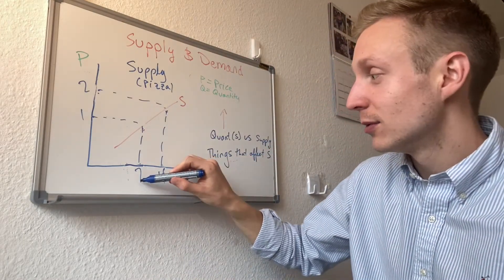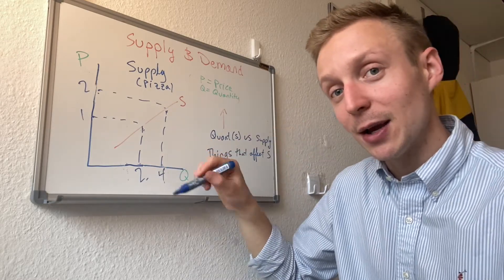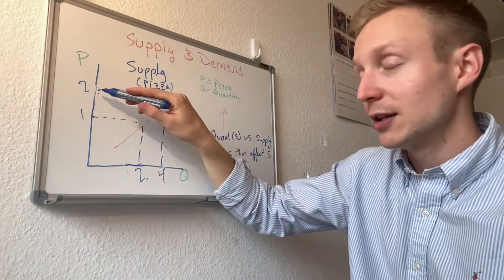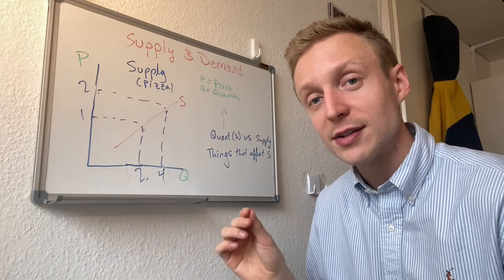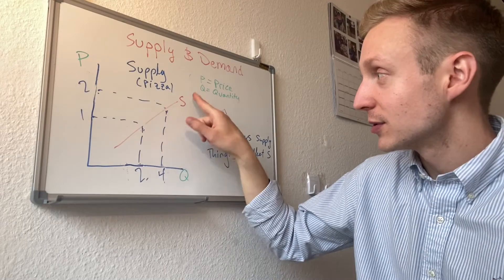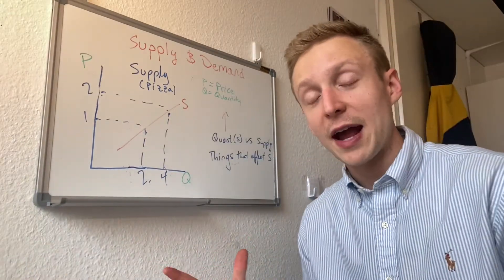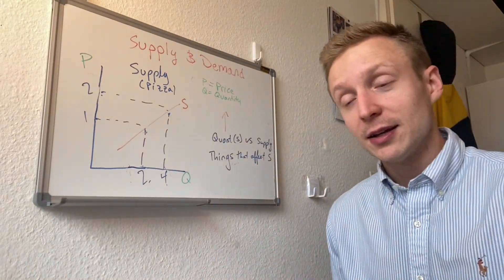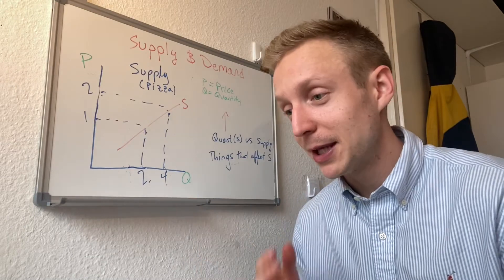So again, quantity supplied is this value, is a specific point on the curve related to a specific price. That's quantity supplied. But supply is the aggregate, the total, this graph.